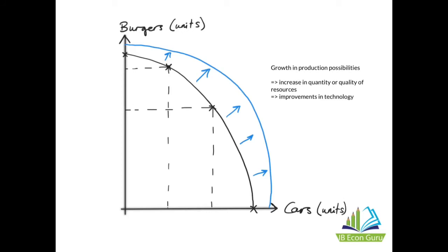The PPC can also be used to illustrate growth in production possibilities. This happens when there is an increase in the quantity or quality of resources — for example, investments in education and healthcare improving the quality of the labor force, or discovery of new natural resources. Significant improvements in technology will also lead to growth in production possibilities. This is illustrated by an outward shift of the PPC.